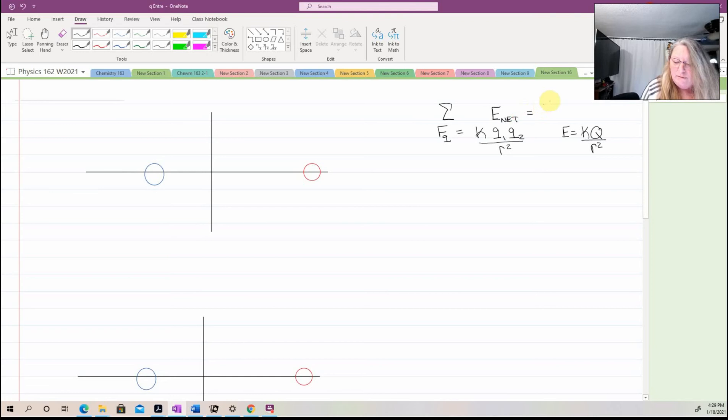So my E net is going to equal, let's see, we go F on Q. I'm cringing a little bit over the wording of that, divided by Q. Other way of saying that is that, remember, our electric field is just the net charge per Q.